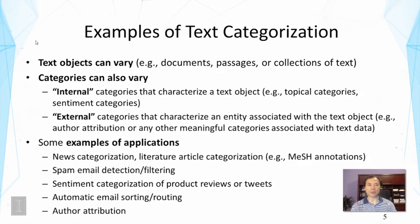Categories can also vary. We can generally distinguish two kinds. The first is internal categories — those that characterize the content of text objects, such as topic categories or sentiment categories. The second is external categories, which characterize the entity associated with a text object, such as the author. For example, we can use content to determine which author wrote which part — that's called author attribution.